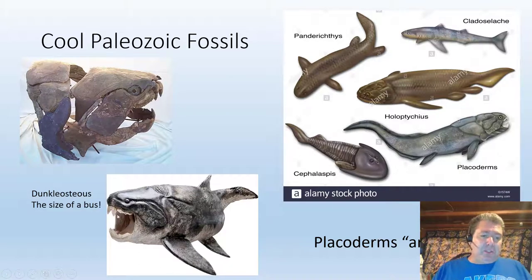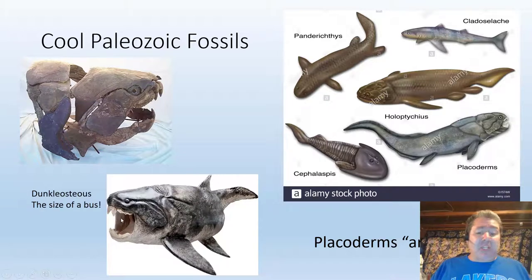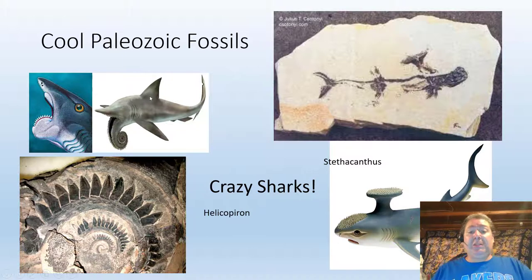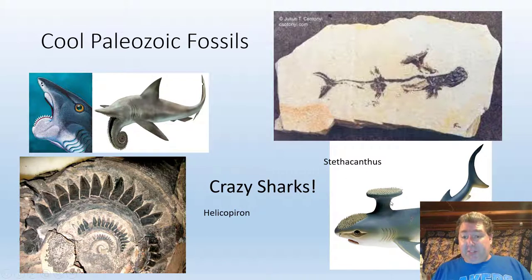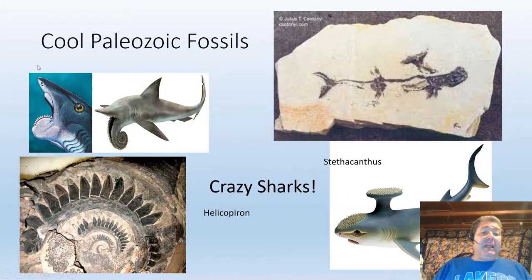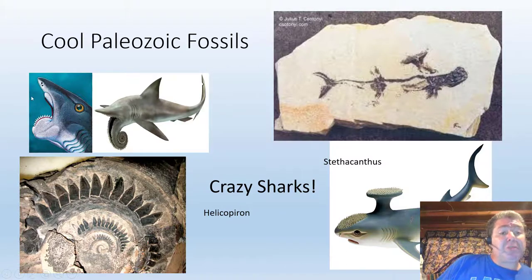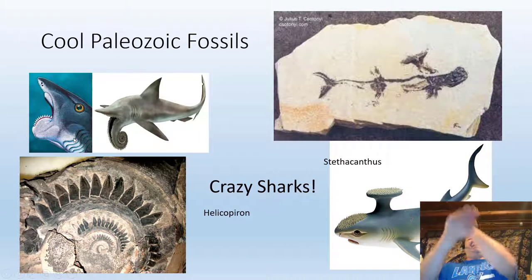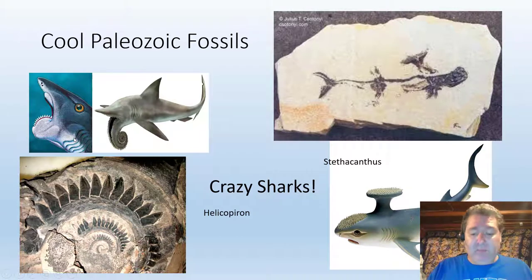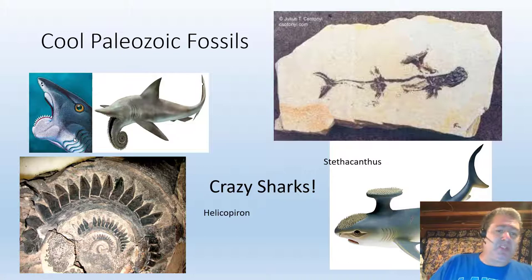Here are some true fish: armored fish called placoderms. The biggest was Dunkleosteus, the size of a school bus with such strong jaws he could probably take bites out of one. We also have some really crazy sharks in the Paleozoic: Stethacanthus had a strange plate on its head, and Helicoprion — the buzzsaw shark — had a lower jaw that was a whorl of teeth. It was about 20–25 feet long, the size of a great white shark.